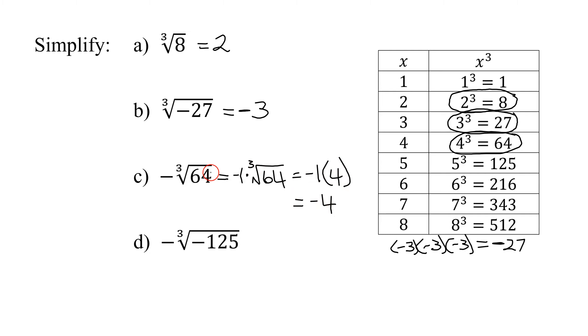One word of caution with radicals dealing with 64. 64 is a perfect square, it's eight squared. But it's also a perfect cube, it's four cubed. So be very careful when you see 64. Make sure whether you're taking the square root or the cube root.